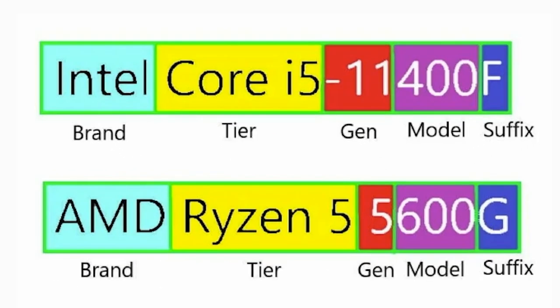The first component is the brand, which would be AMD or Intel, of course. The second is the tier of the processor. For Intel, this could be something like Core i5, i7, or i9. With AMD, it's names like Ryzen 5, 7, or 9. As the numbers go up, the performance level increases.